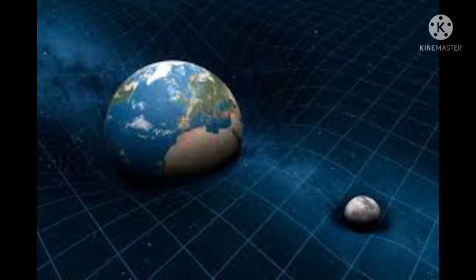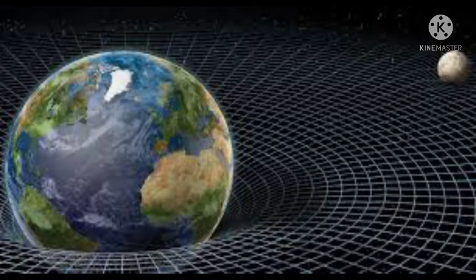He said that gravity holds the moon in orbit around Earth. It holds the planets in orbit around the sun. Newton's ideas on gravitation explained many things about how apples fall and how stars and planets move.